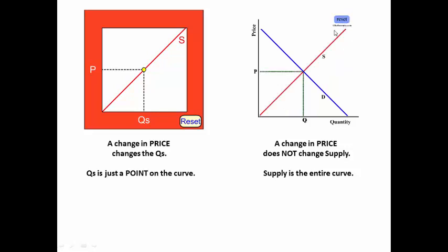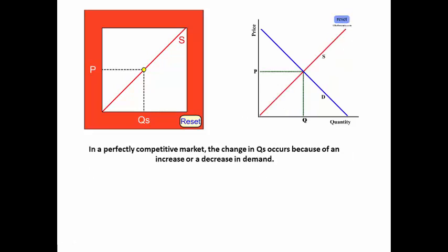You'll learn this in a future lesson. In a perfectly competitive market, as shown on this graph here to the right, the change in quantity supply occurs because of an increase or a decrease in demand.